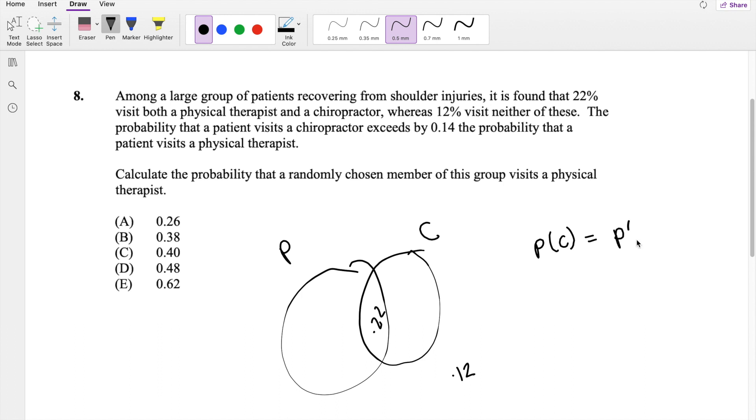So the probability of chiropractor equals probability of physical therapist plus 0.14. Do you agree with that statement? Because they're saying the probability that the person visits a chiropractor is bigger than the probability that they visit a physical therapist by exactly 0.14. So this is what you get.